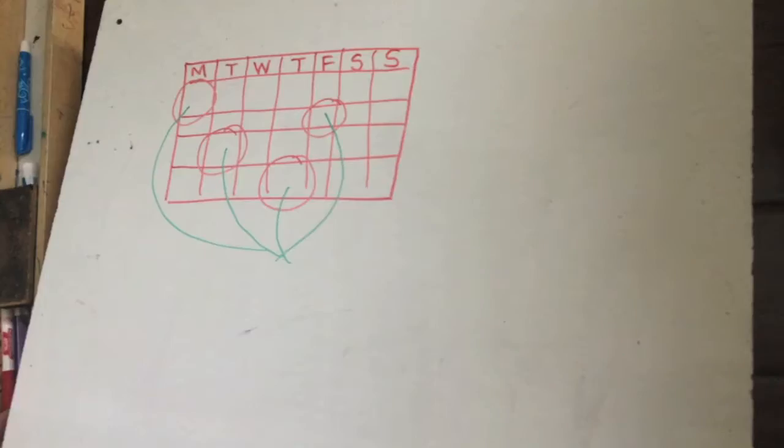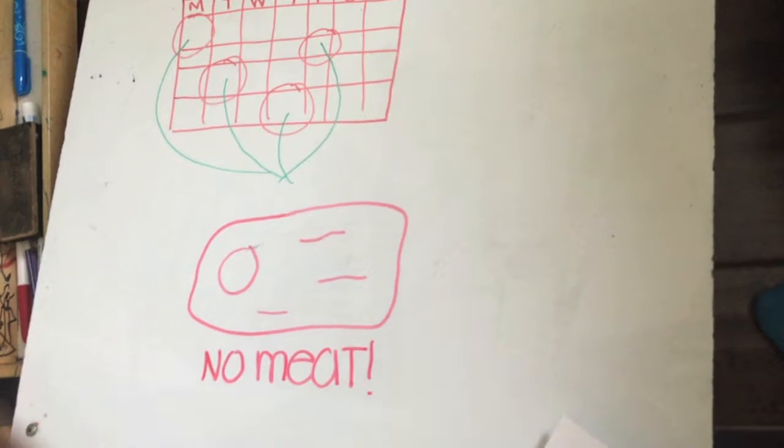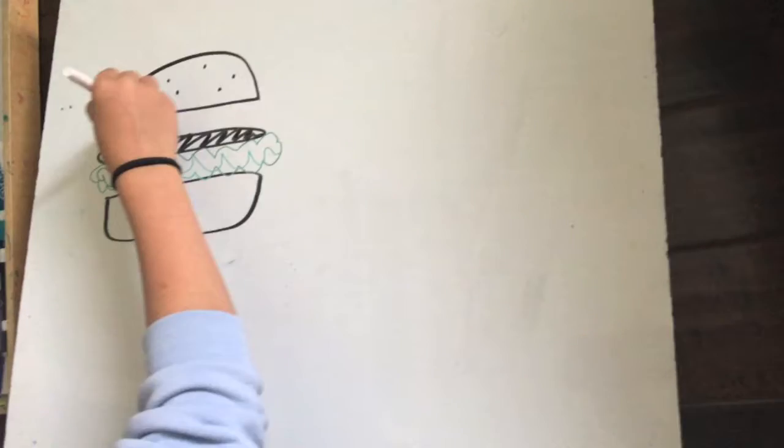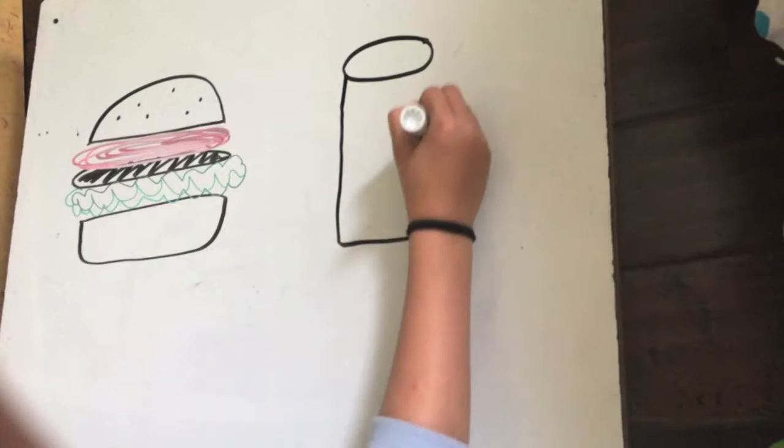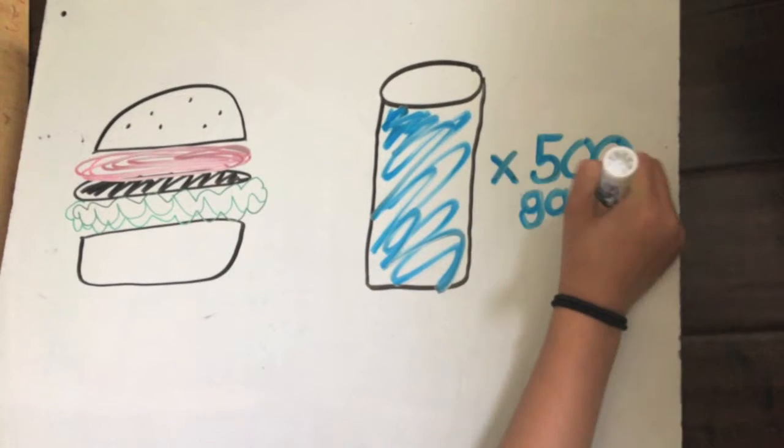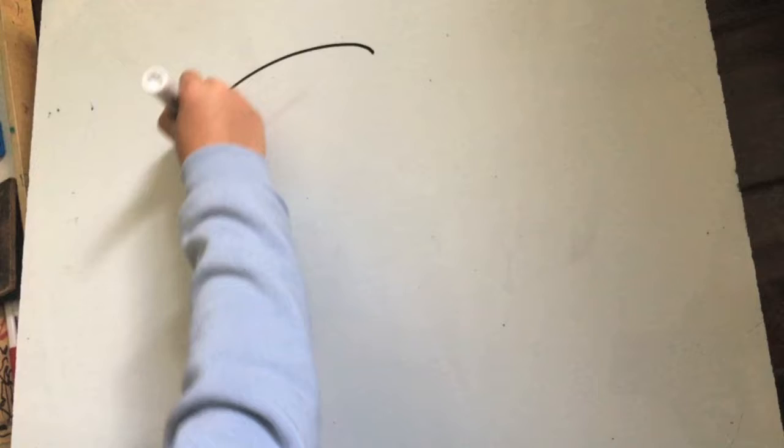Also, have one day a week where you're vegetarian. This reduces the amount of meat you eat and helps you live longer. It takes almost 2,000 gallons of water just to make one hamburger, so you shouldn't be eating that much meat.